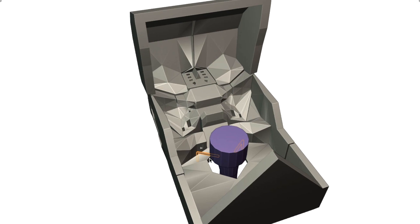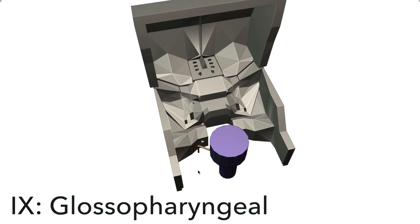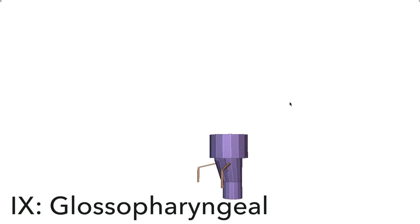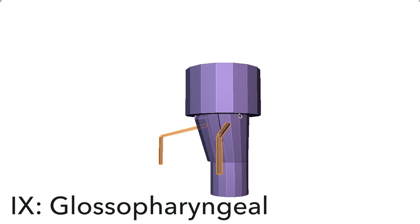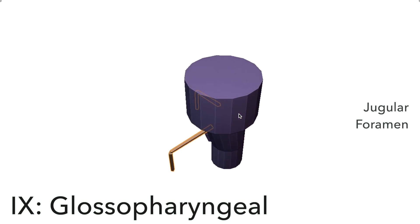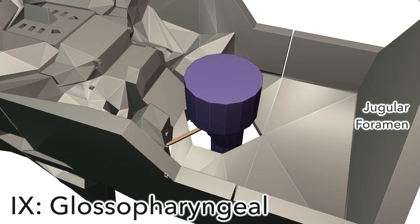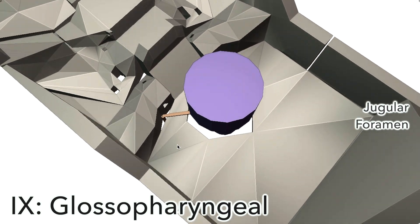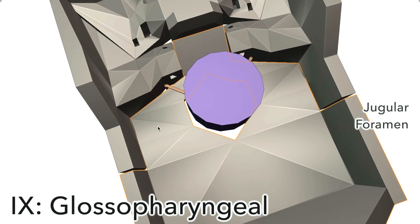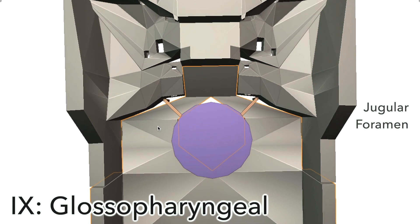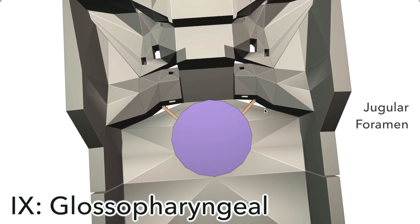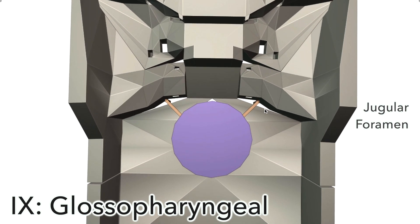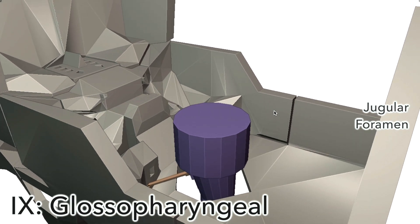Number nine is the glossopharyngeal nerve, which originates close to the olive of the medulla. So that's the olive there, on the lateral margin of the medulla. And it heads through the jugular foramen, which is actually the junction between the temporal and occipital bones. So that's the temporal bone, there's the occipital, and there's the jugular foramen, which is the space between them. And that's where our glossopharyngeal nerve passes through to exit the skull. It gives us sensation in the oropharynx and in the posterior part of the tongue.